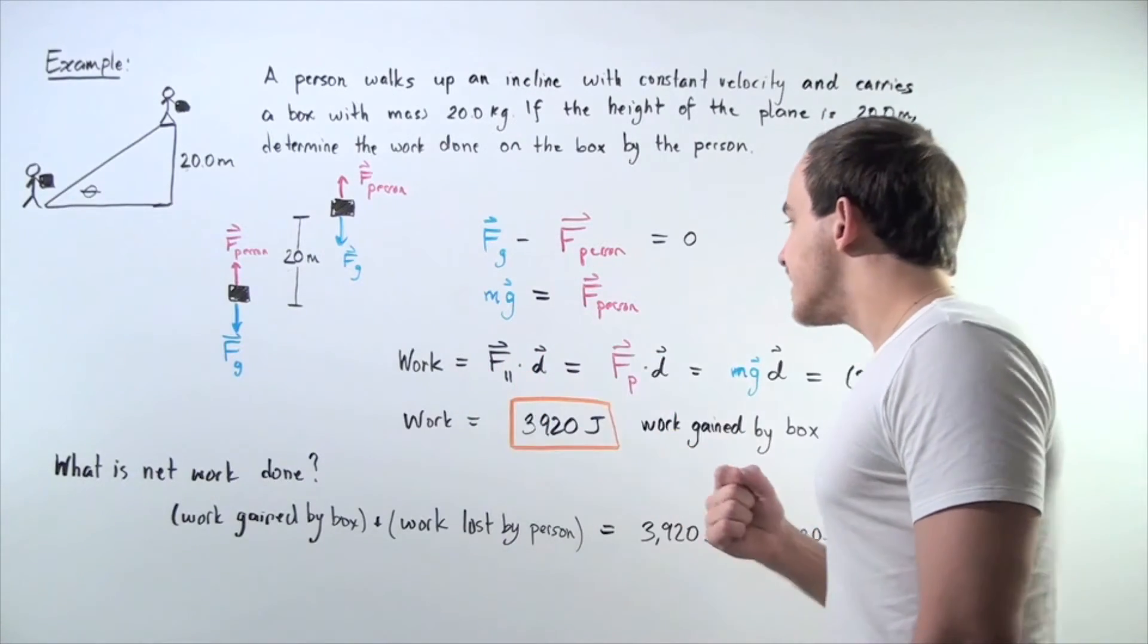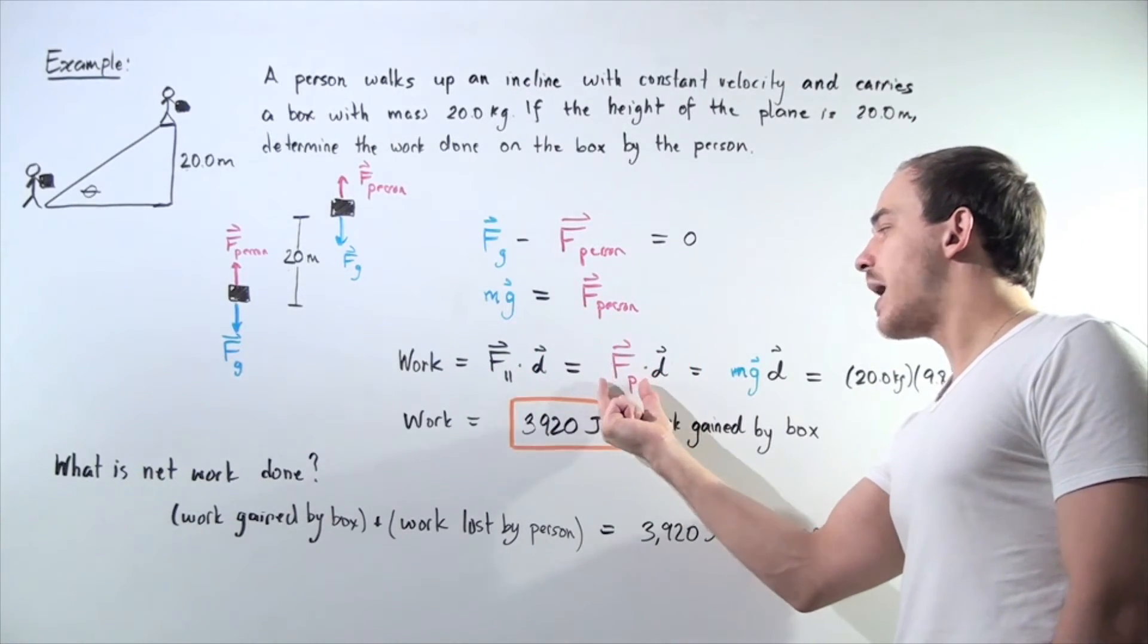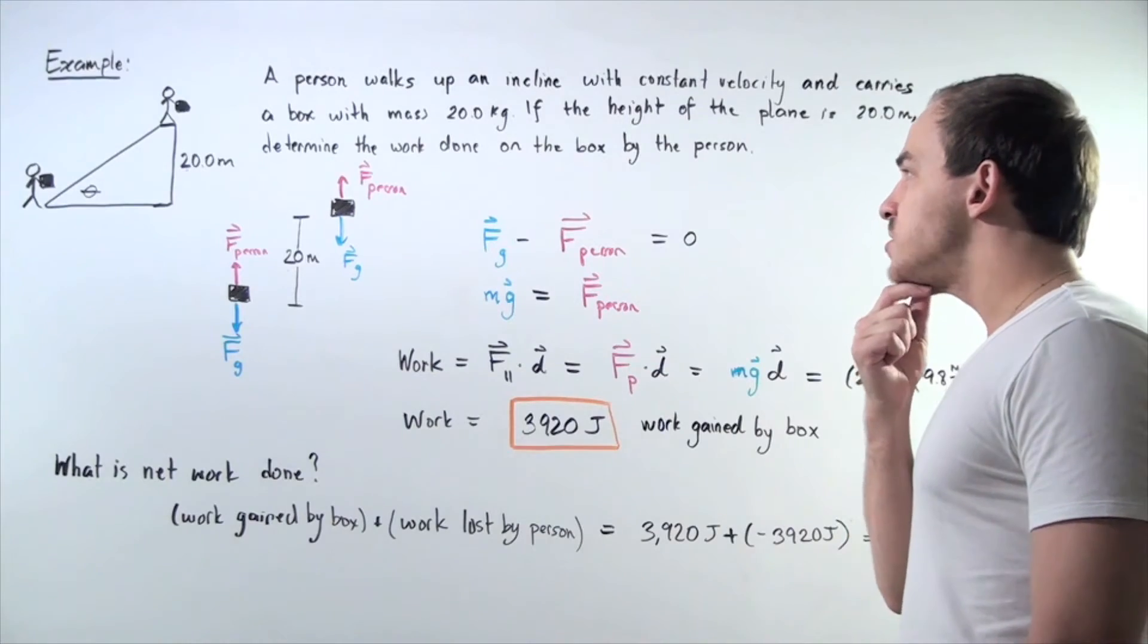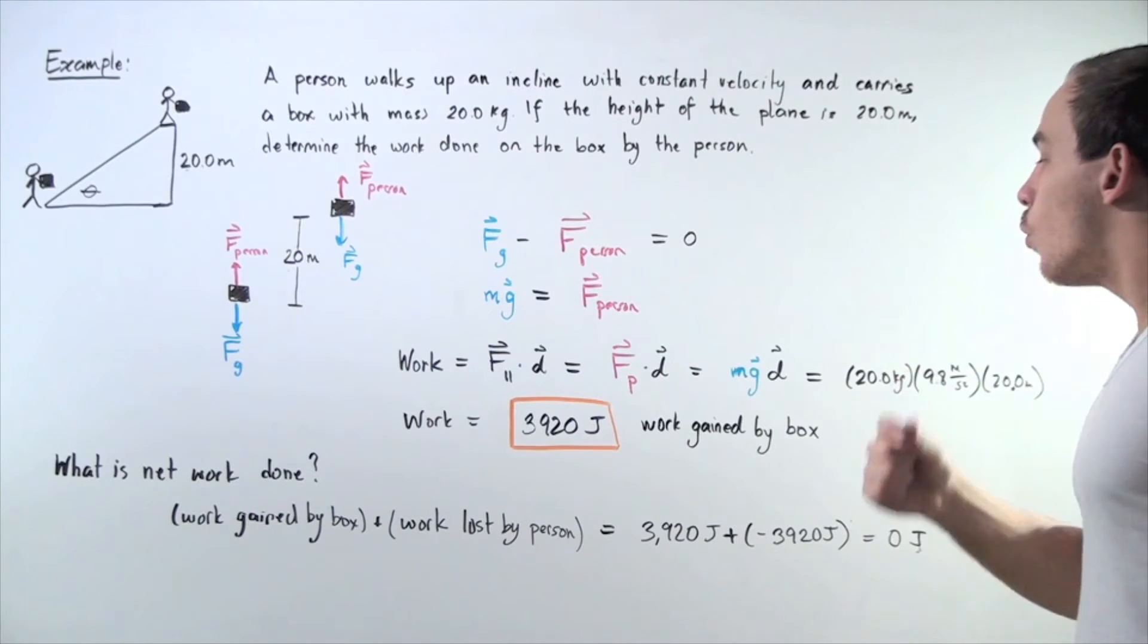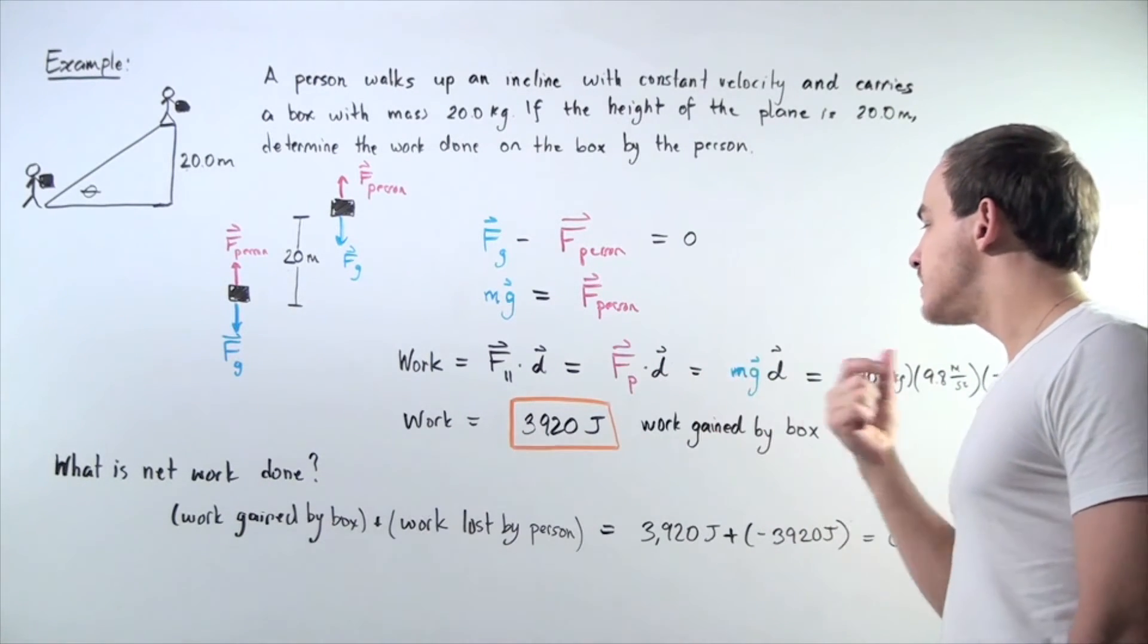This force is simply our force created by the person, Fp, multiplied by displacement. Since Fp is equal to m times g, we replace Fp with m times g.